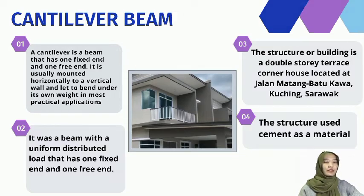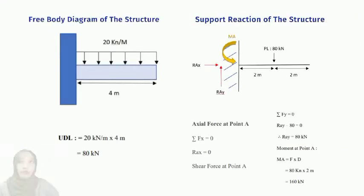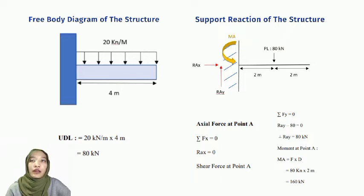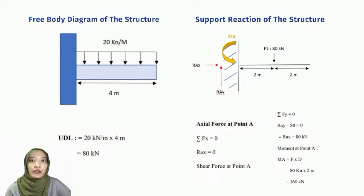The material used for this structure is cement. The free body diagram of the structure has been drawn. The beam consists of a four-meter length with a load of 20 kN per meter, giving a uniform distributed load of 80 kN. The support reaction at moment A can be seen on the slide.